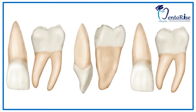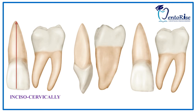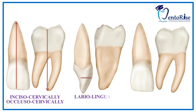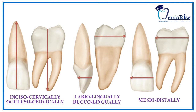There can be three approaches as to how to divide a surface of the tooth into thirds. These are incisocervically or occlusocervically, labiolingually or buccolingually, and mesiodistally. These basically represent the direction along which we have to move while dividing a tooth.